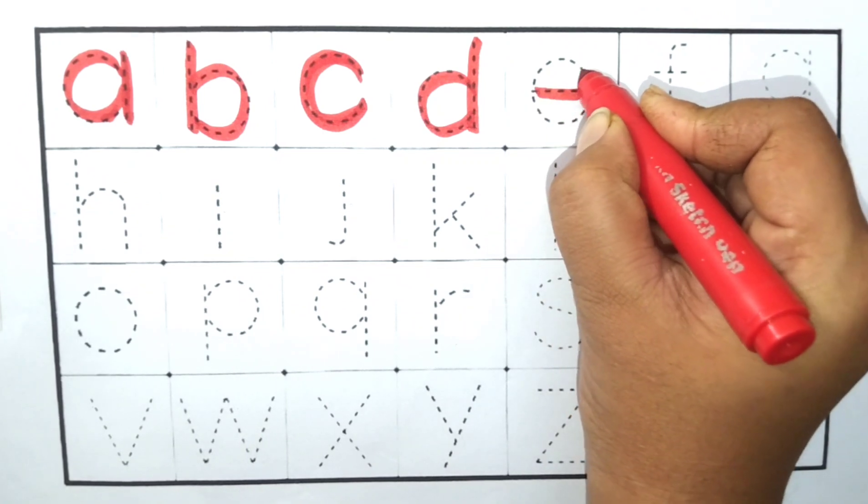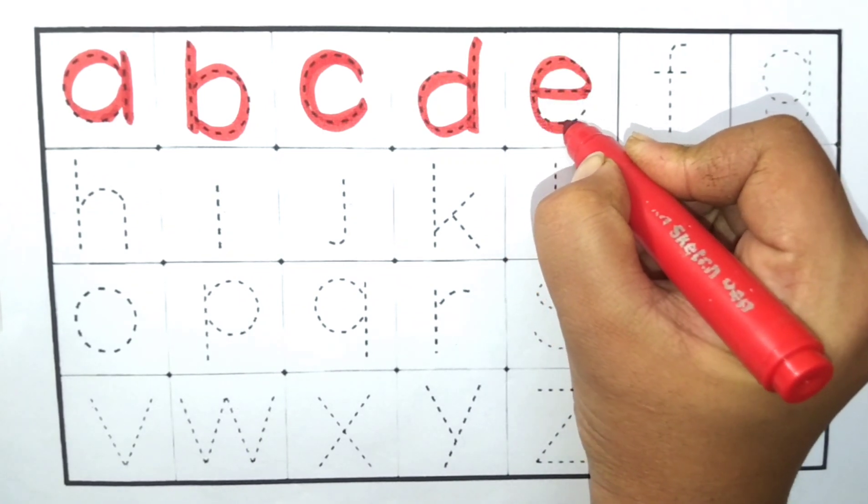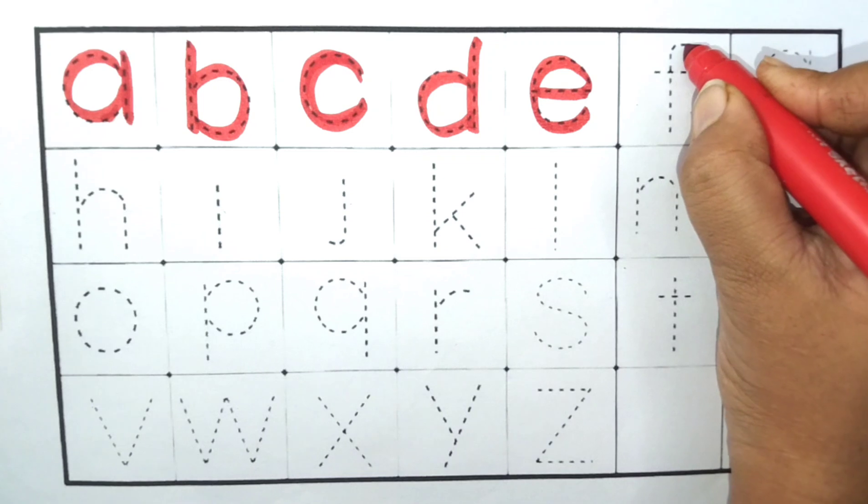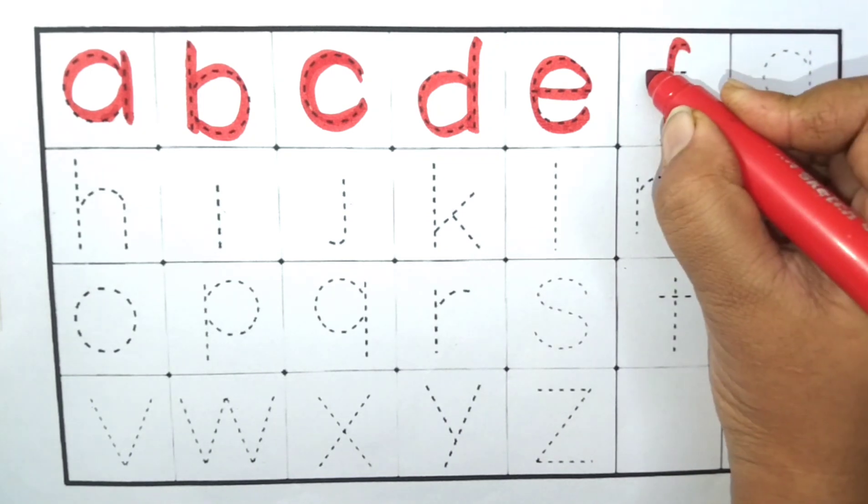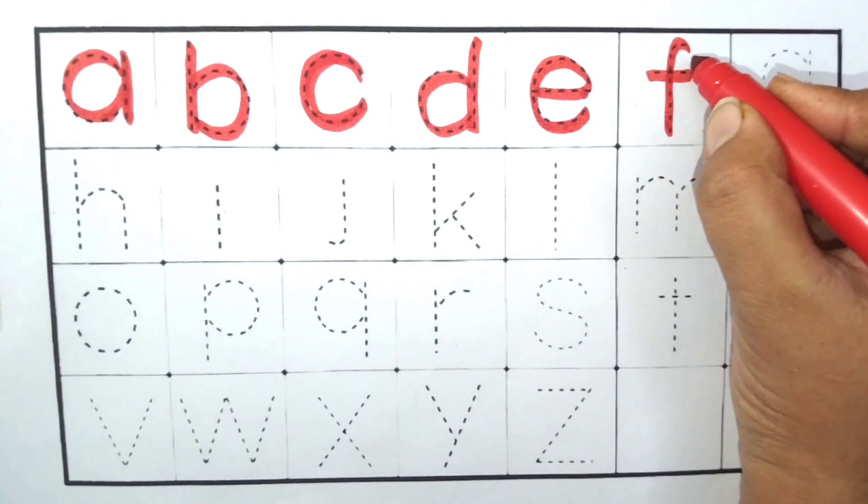E. E4. Elephant. Elephant means hathi. F. F4. Fish. Fish means machli.